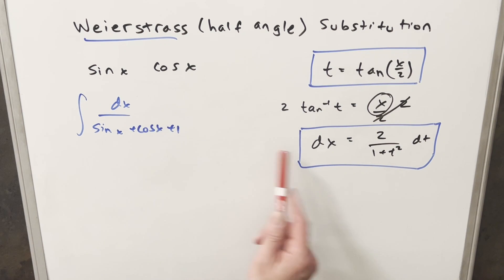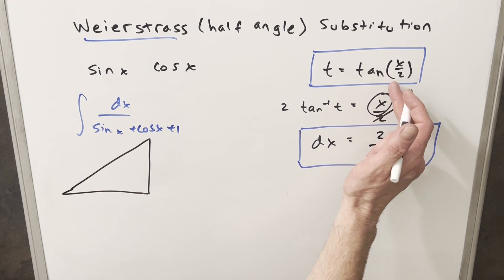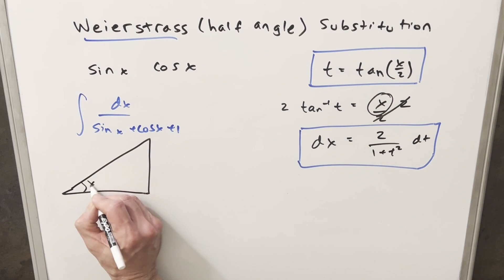So now we have the dx value for our substitution. But if we have an integral like this, we're going to want a value for sine x and we're going to need a value for cosine x. So before I get to that, what I want to do is just draw our triangle. I'm going to use this as the starting point. So the angle on this is going to be just x over 2.